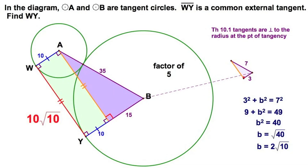So either way, you'll find that in this example, we have 10 radical 10 for WY, which is the common external tangent. And we're done.